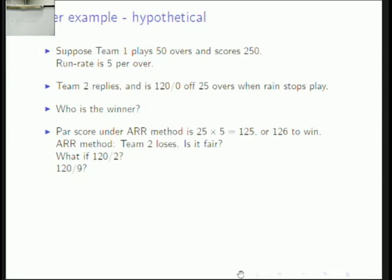It is only the fact that 9 wickets have been lost and they have only one more wicket in hand that matters. The actual pattern of the fall of wickets is inconsequential. Just as 250 in 50 overs has all the information you need, all that information is contained in the state '120 for 9.'